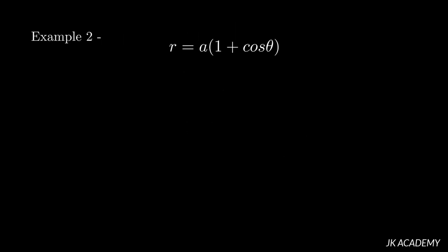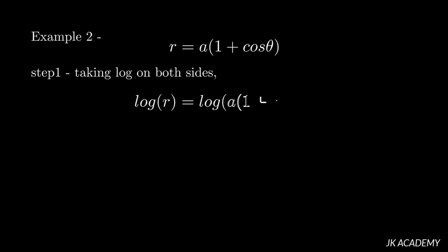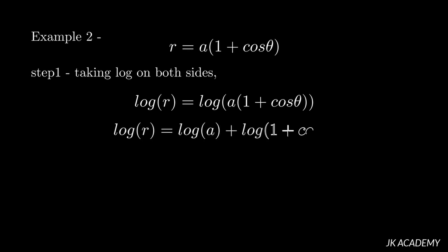Let's take another example: r = a(1 + cosθ). Step one: take log on both sides. log r = log[a(1 + cosθ)]. Applying log a·b = log a + log b: log r = log a + log(1 + cosθ). This is the deduction we get by applying the log law.